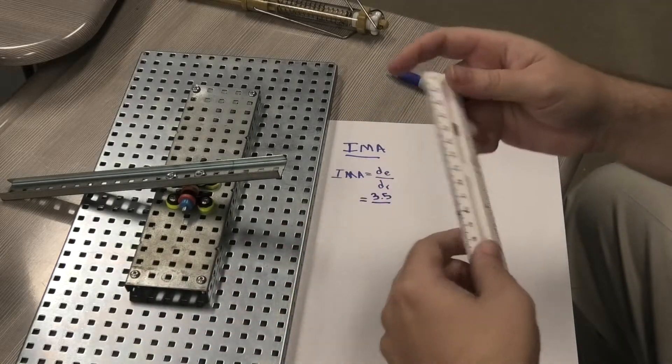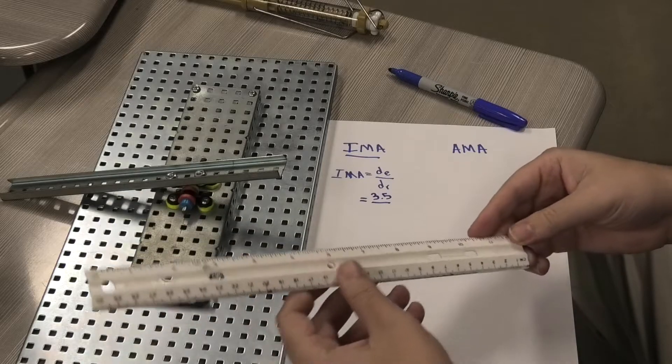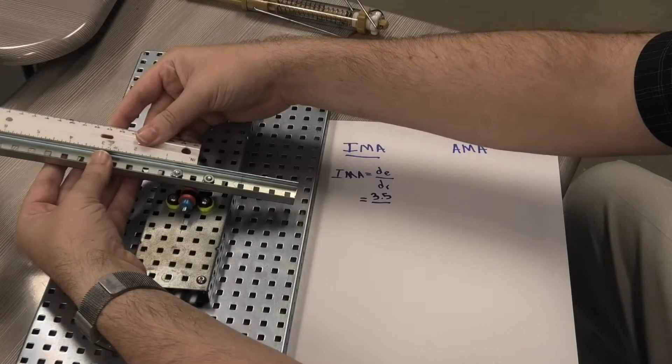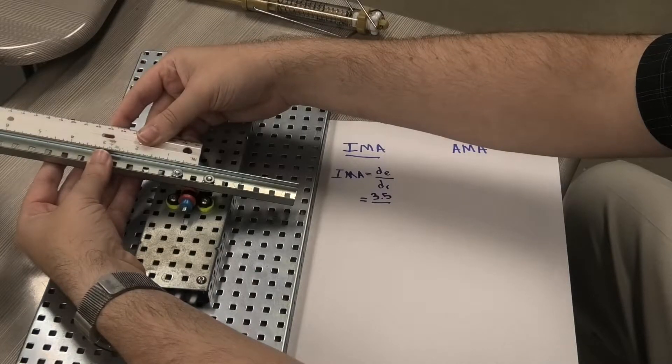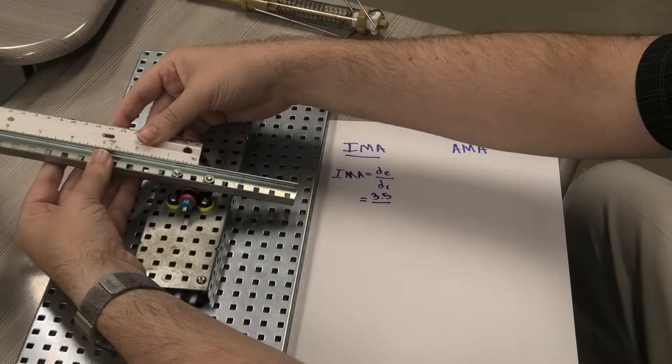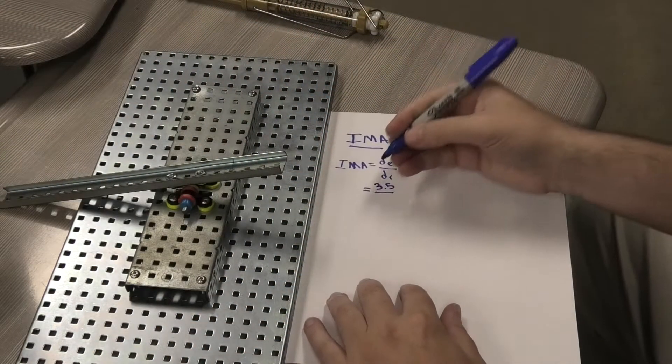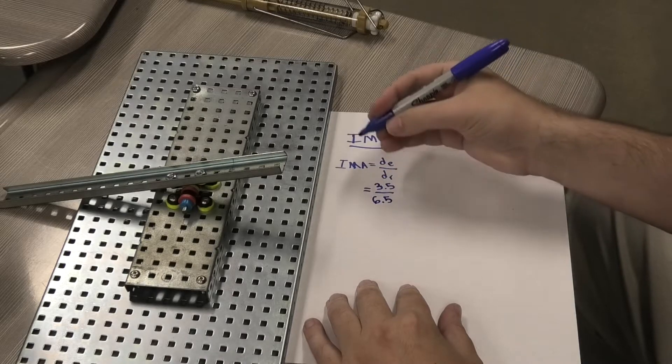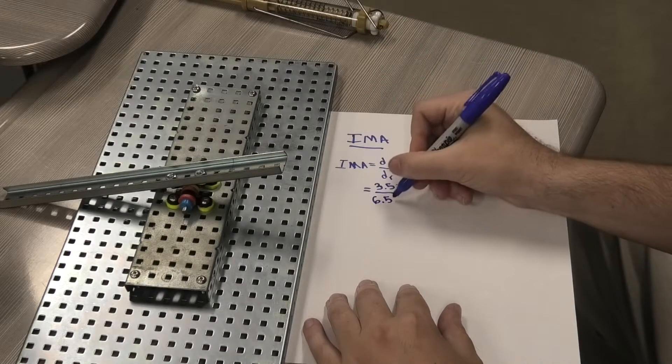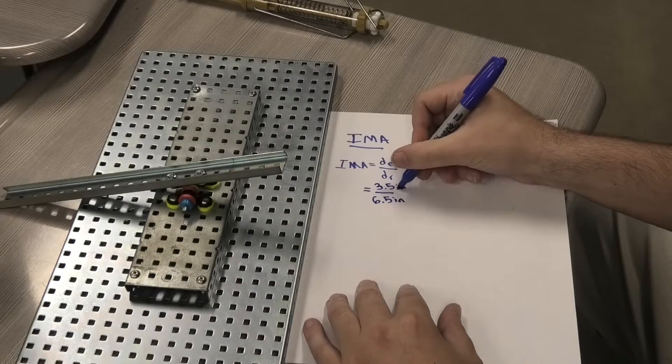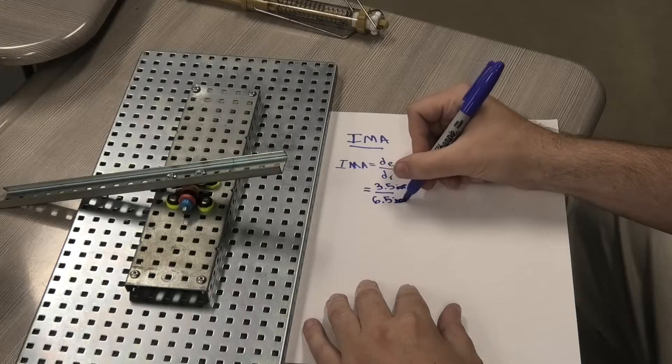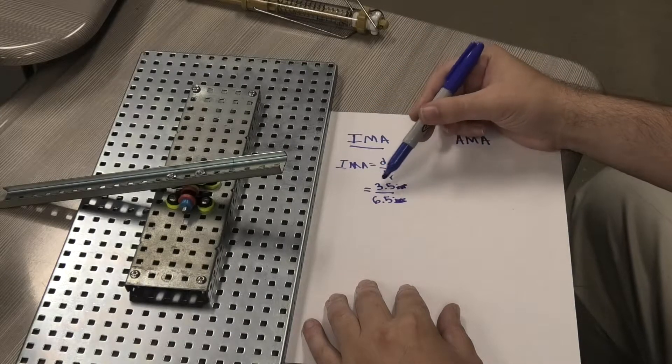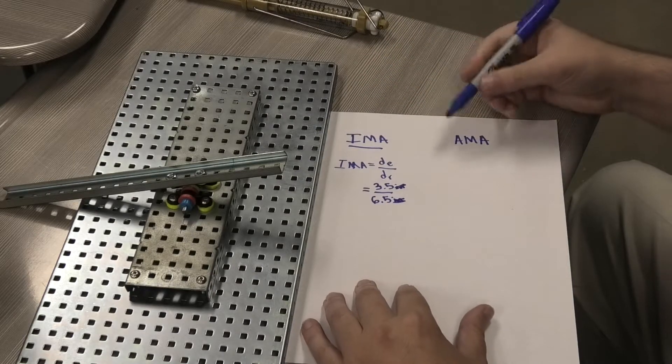The resistance distance is going to be, let's measure this way. Let's go from the fulcrum out. It looks like it's going to be about six and a half. So it's going to be 3.5 over 6.5, which is going to give you a ratio. These are both in inches, but the inches are going to cancel out. So your IMA is just going to be a simple ratio of 3.5 divided by 6.5, whatever that number is you need to report that to me.